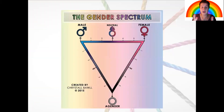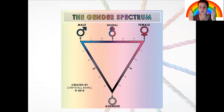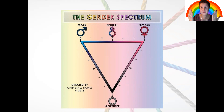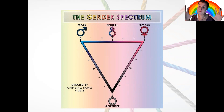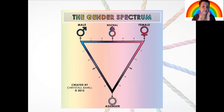To talk about gender, I like exemplifying with this image. We have male and female, which is the binary that society recognizes. In the middle, we have neutral, which can be a mix of male and female. And at the bottom, none of them — agender, no gender at all.